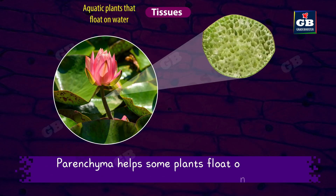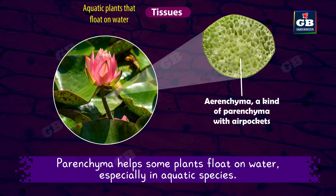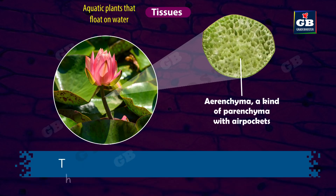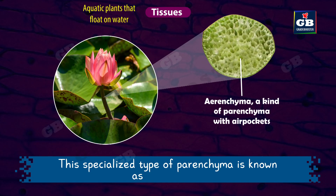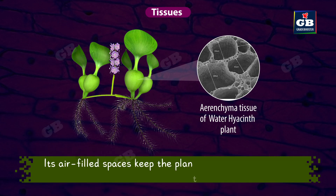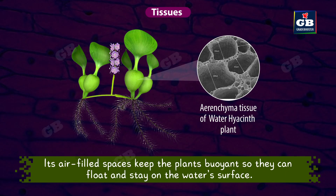Parenchyma helps some plants float on water, especially in aquatic species. In these plants, the parenchyma cells have large air cavities. This specialized type of parenchyma is known as aerenchyma. Aerenchyma helps aquatic plants stay afloat by making them less heavy — its air-filled spaces keep the plants buoyant so that they can float and stay on the water's surface.